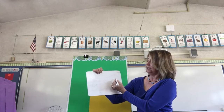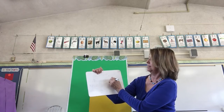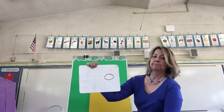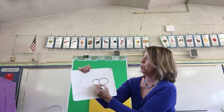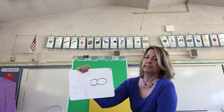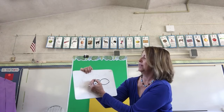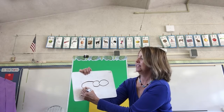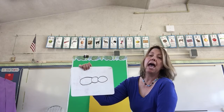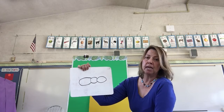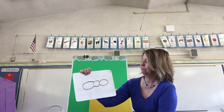So an insect has a head. The next body part I'm gonna draw is the thorax. The last word is kind of fun to say: abdomen. Head, thorax, abdomen.